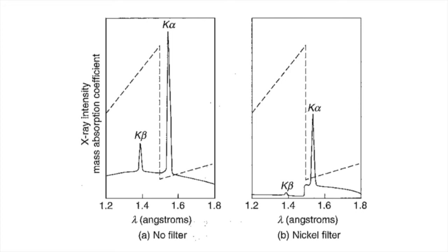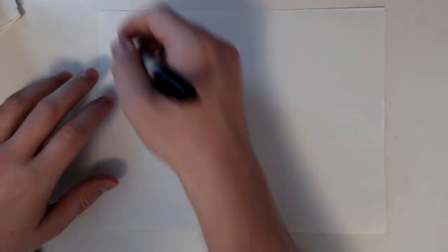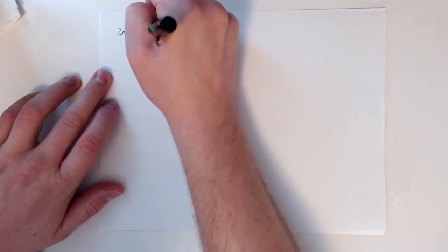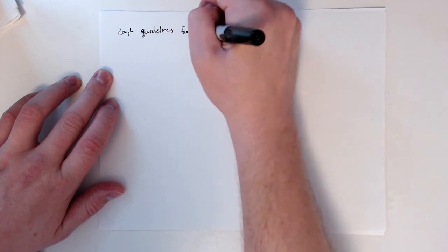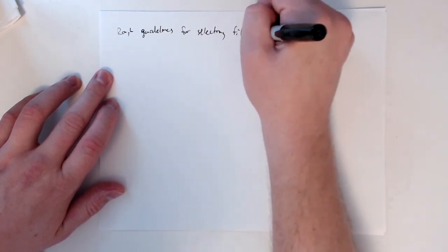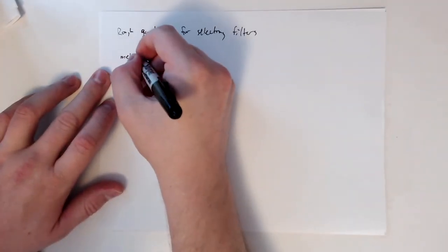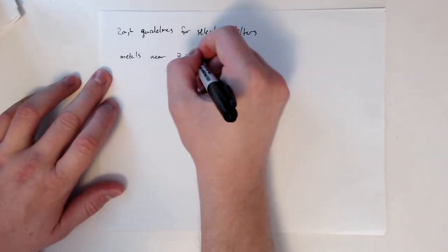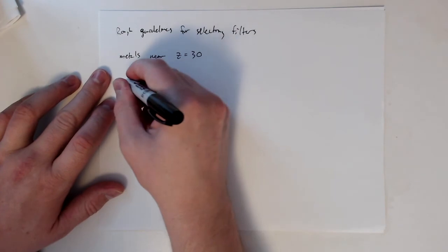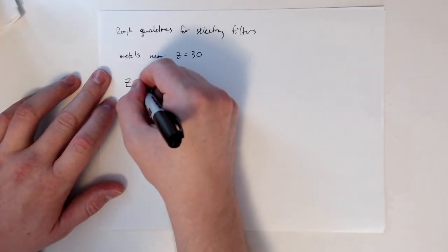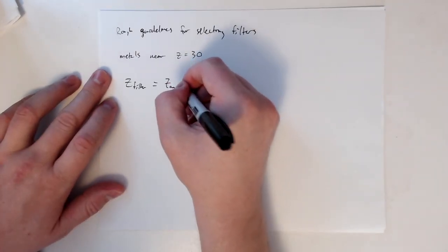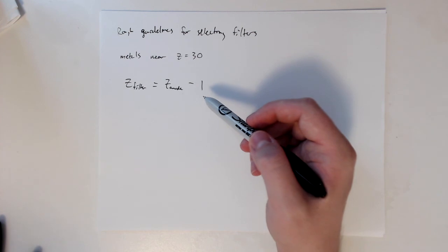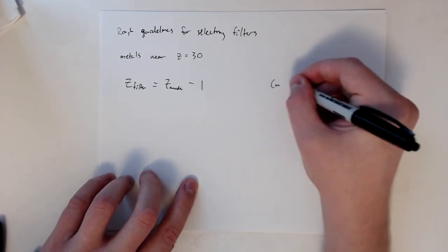Let me switch back over to the paper and show you how we can select filter materials. For copper radiation we see that nickel is a really good filter because of its absorption edge. We have a rough guideline for selecting filters. If we have metals near atomic number 30, then the atomic number of our filter should be the atomic number of the anode minus one.